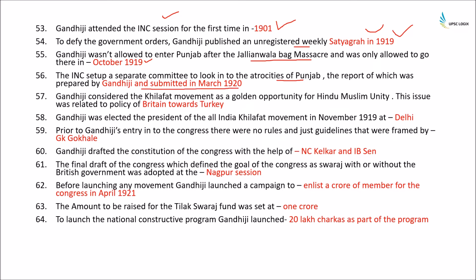Gandhiji considered the Khilafat movement a golden opportunity for Hindu-Muslim unity, as the issue was related to Britain's policy towards Turkey. He was elected president of the All India Khilafat movement in November 1919 at Delhi. Prior to Gandhi's entry into the Congress, there were no formal rules — only guidelines framed by Gopal Krishna Gokhale. Gandhiji drafted the constitution of the Congress with the help of N.C. Kalkar and I.B. Sen. The final draft, which defined the goals of the Congress as Swaraj with or without the British government, was adopted at the Nagpur session.